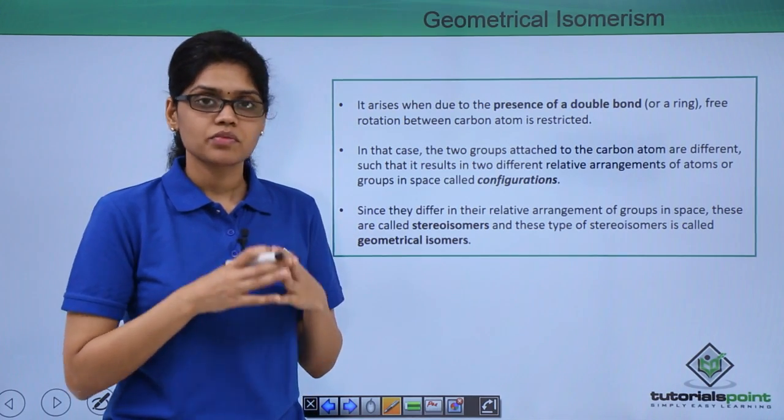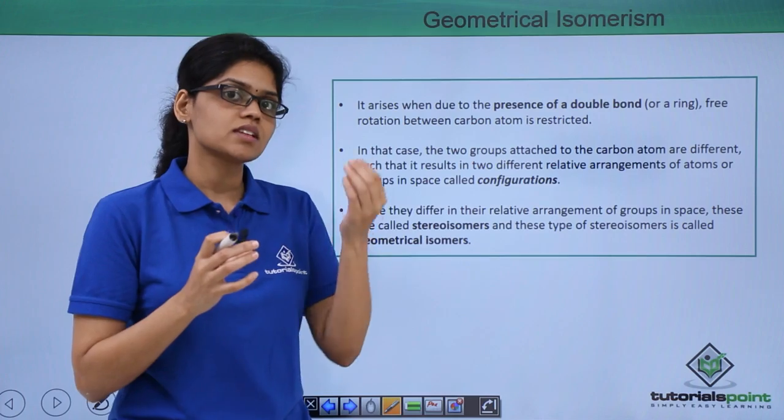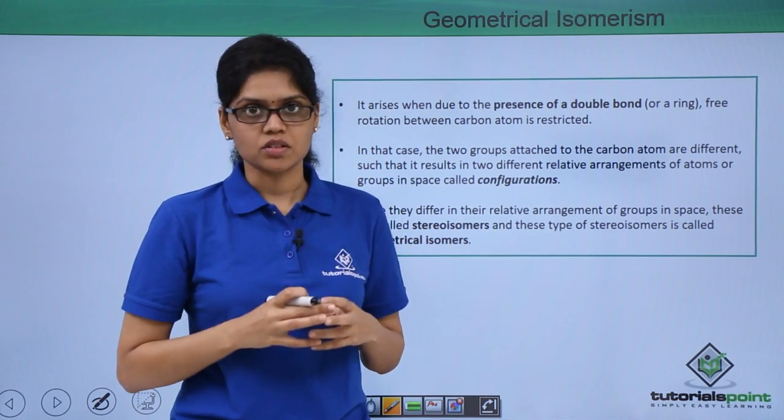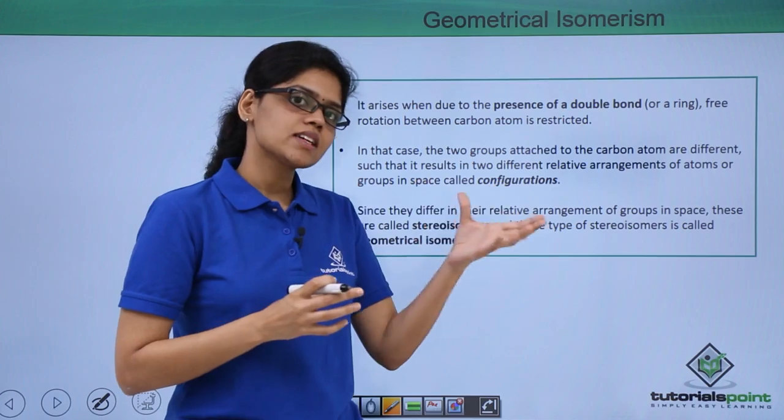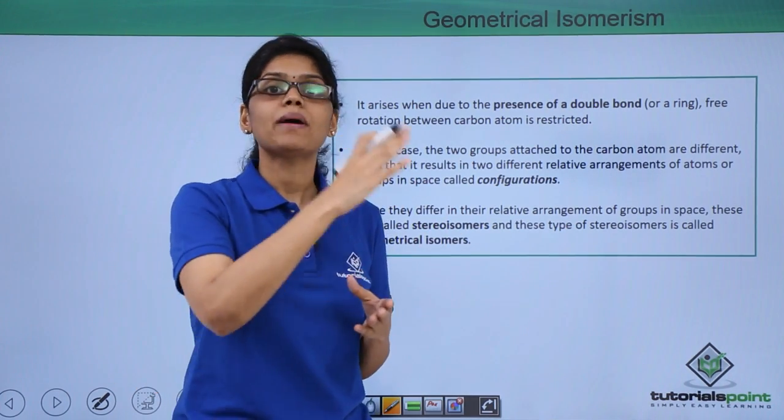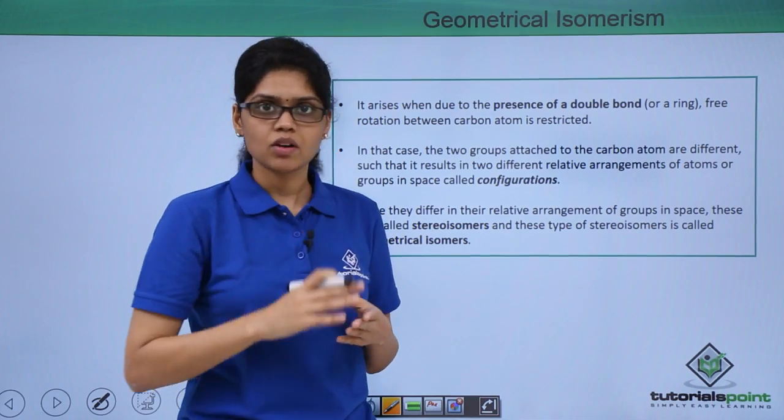We have a rigid structure essentially like a double bond or a ring such that there is restricted rotation. For instance let us take the example of a double bond. We know that C-C double bond is formed when there is a parallel overlap between the p-p orbitals.